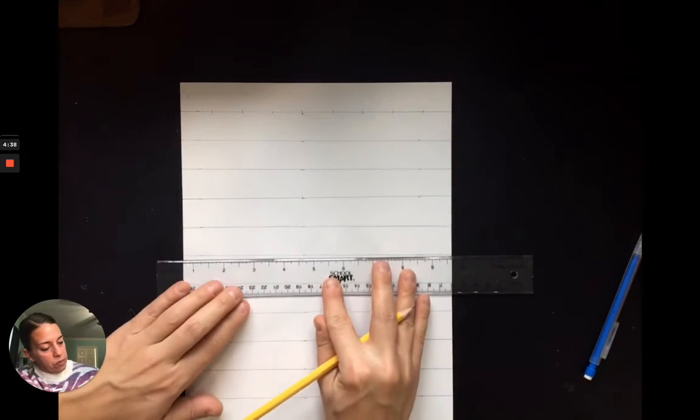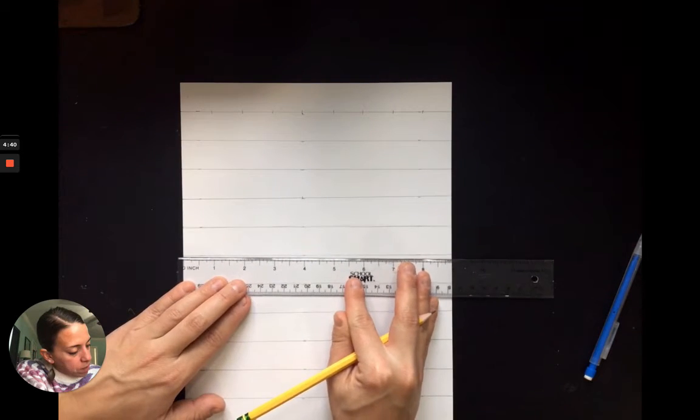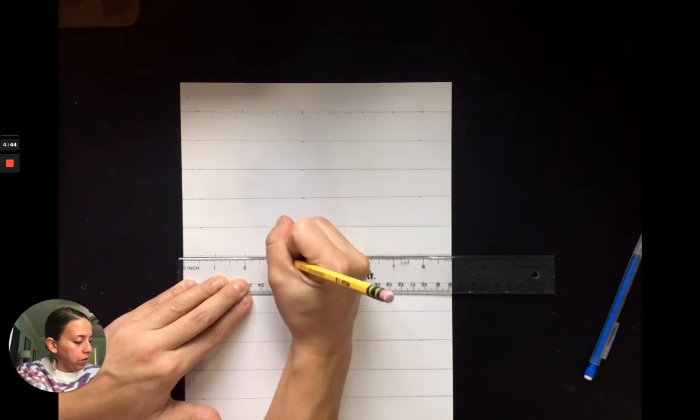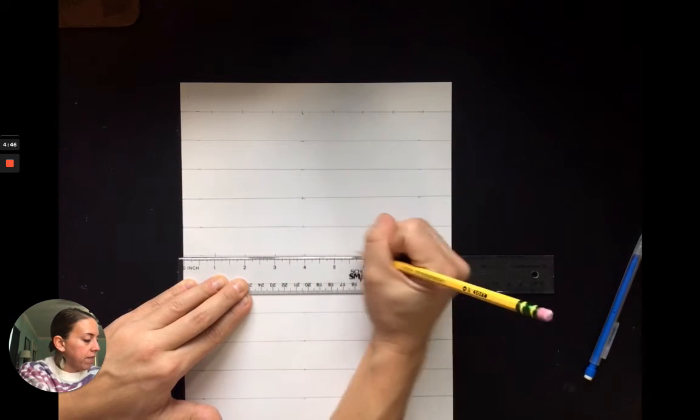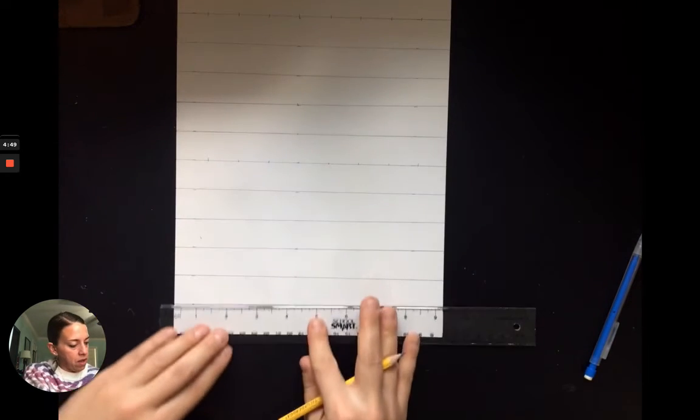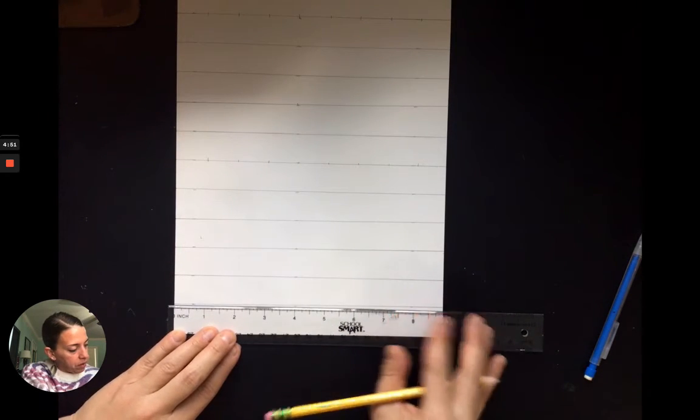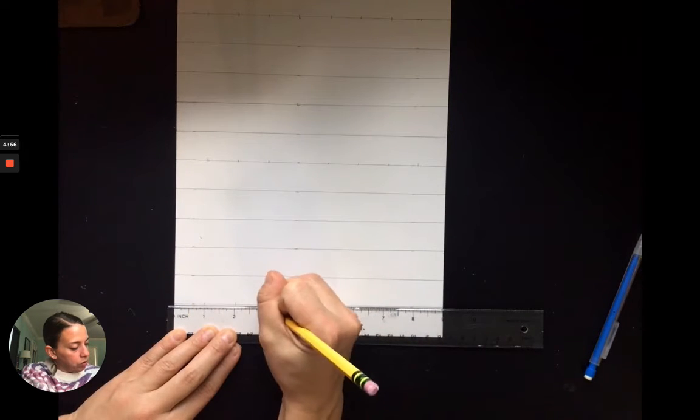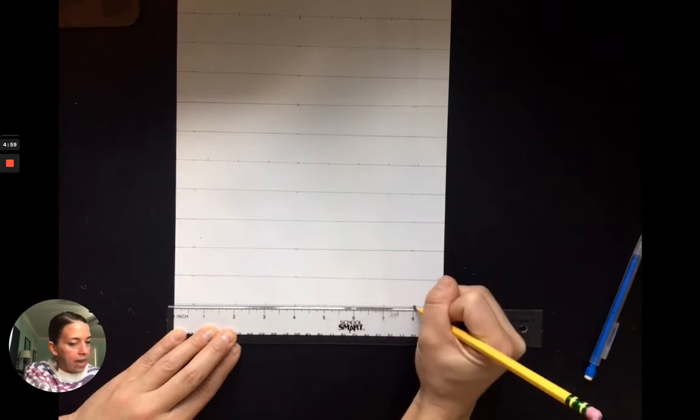I'm going to slide my ruler down, do it again towards the middle of my paper, just picking a line. One, two, three, four, five, six, seven, and eight. I'm going to do this one more time at the bottom of my paper, lining up my zero, and marking again. One, two, three, four, five, six, seven, and eight.